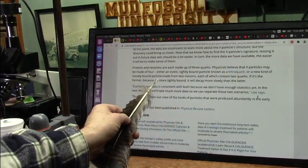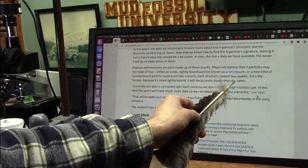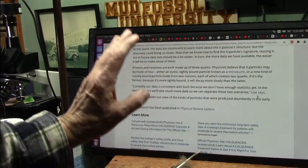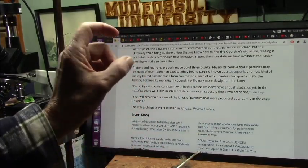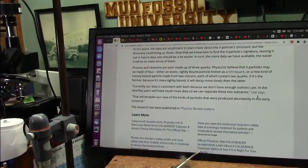They're tightly bound particles called tetraquarks. A new kind of loosely bound particle made from two mesons, each of which contain two quarks. If it's former, because they're just lost. They have no clue what to say whatsoever now. And they're trying to hide from the fact that I have discovered this tetraquark.